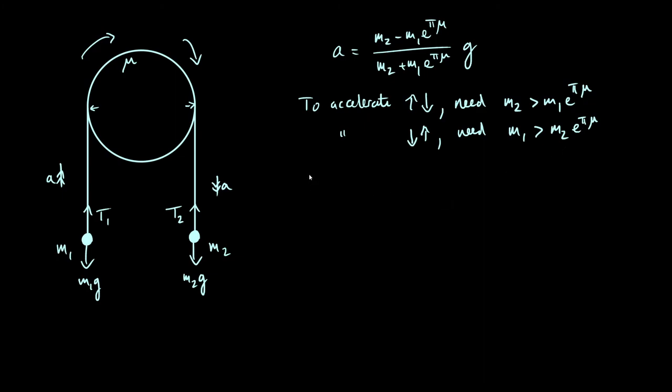So to summarize this information, we can say basically the system accelerates if either of these conditions is satisfied, which we can write in terms of the mass ratio m2 over m1, we can say the system accelerates if m2 over m1 is bigger than e to the pi mu, or m2 over m1 is less than e to the minus pi mu.